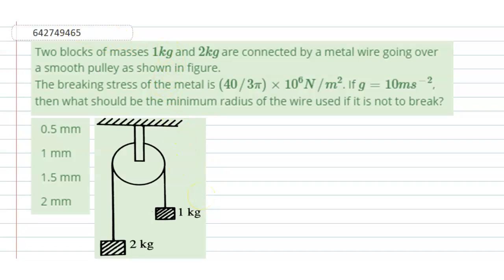Two blocks of masses 1 kg and 2 kg are connected by a metal wire going over a smooth pulley as shown in figure. The breaking stress of the metal is 40 by 3π times 10 to the power 6 Newton per meter square.